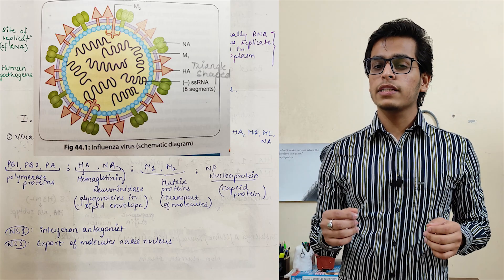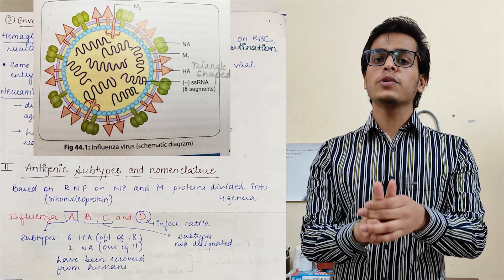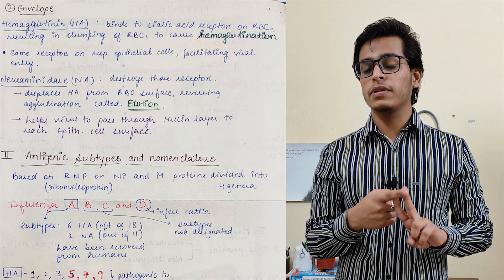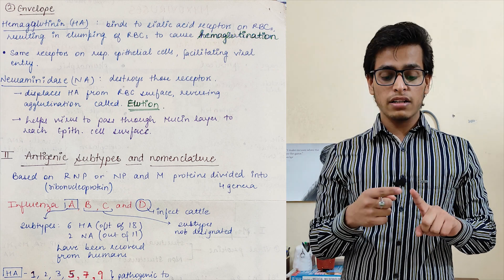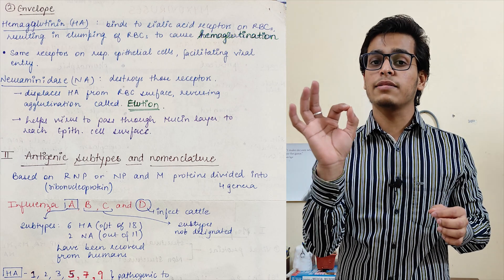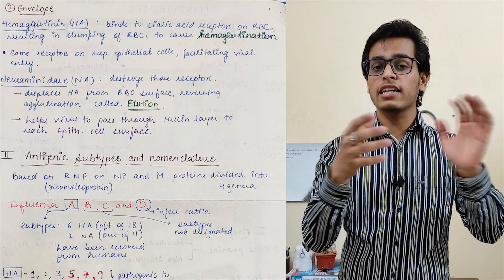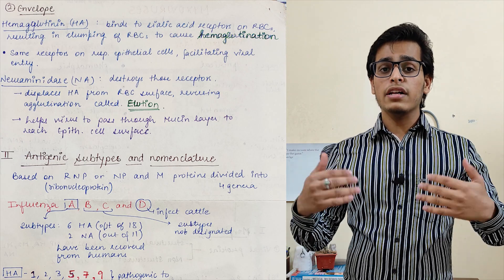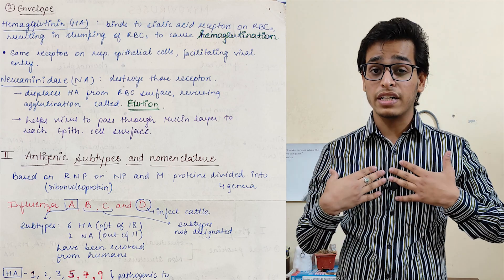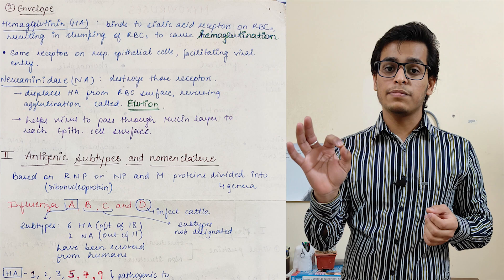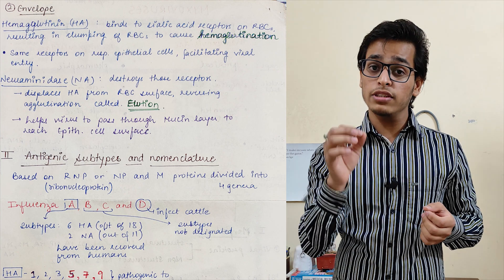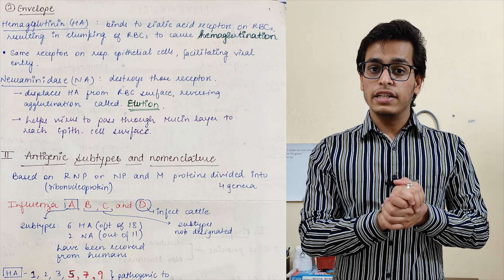After talking about viral proteins, we will talk about the virus's envelope. There are two major proteins in the virus's envelope. The first one is Hemagglutinin and the other one is Neuraminidase. Hemagglutinin, as the name suggests, causes hemagglutination — it binds to the sialic acid receptors on the RBC and clumps them. In our context, the same kind of receptor is present on your respiratory epithelium, and that is how this virus infects your respiratory membrane.